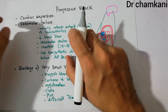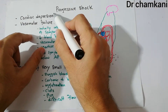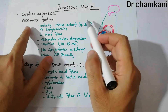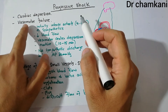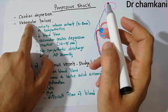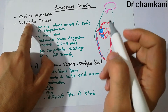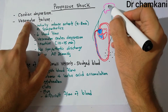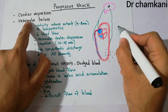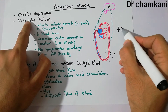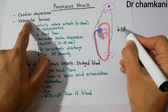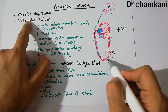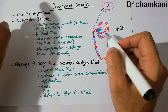Now we will discuss another factor which plays an important role in the conversion of non-progressive shock into progressive shock. The second factor is vasomotor failure. We have discussed many times that there is a vasomotor center in the brain. Whenever there is a fall in arterial pressure and there is decreased perfusion of cells in body tissues due to any condition,